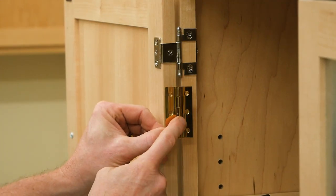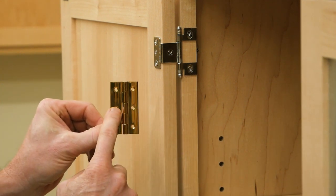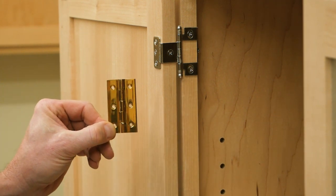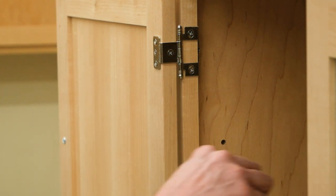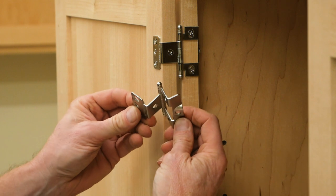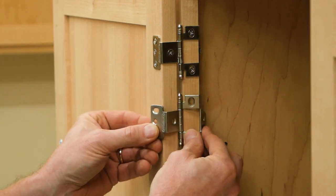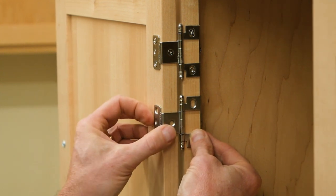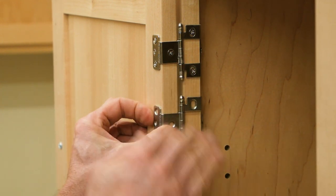On a butt hinge like this brass one, you'd have to cut one mortise into the edge of the door for one hinge leaf, and another mortise into the edge of the face frame for the other hinge leaf. But this is a no-mortise wrap-around hinge. Its hinge leaves are bent to 90 degrees, and one hinge leaf wraps around the back of the face frame, while the other wraps around the back of the door. Both hinge leaves simply screw in place, no mortises.